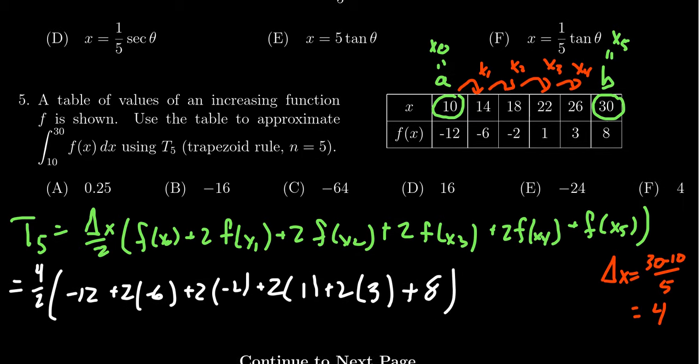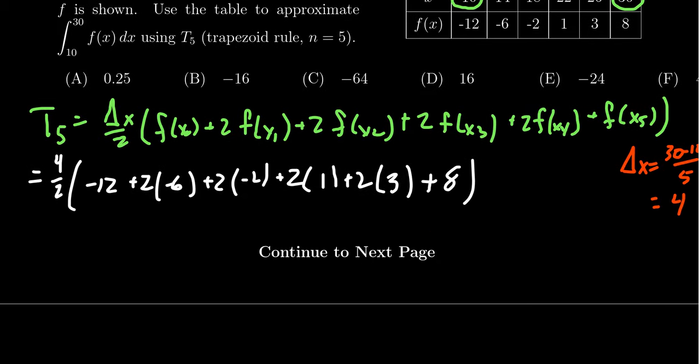Let's try to simplify these things. 4 goes into 2, 2 times, so we get 2 right there. We get negative 12. We're going to get 2 times negative 6 which is another negative 12. We're going to get 2 times negative 2 which is a negative 4. 2 times 1 which is a 2.